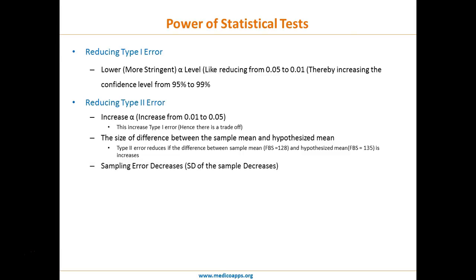Third, sampling error: when the standard deviation of the sample decreases, Type 2 error decreases. Finally, sample size is one of the easiest ways to decrease Type 2 error — the larger the sample, the less the chance of Type 2 error.